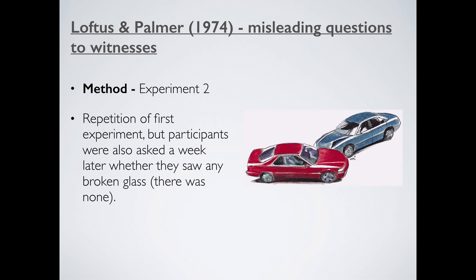Now Loftus and Palmer, it turns out, had rigged the experiment so that there was emphatically no broken glass whatsoever. The two cars smashed into each other, but there was no broken glass there. So what they're doing here is they're thinking, well, if we increase the charge of that verb, are the participants likely to change their memories and see something that definitely didn't happen?